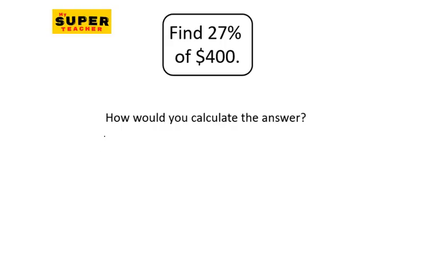Hello, this is Super Duper Awesome Mr. Kitty Pops. Let's see how many ways you can answer this question: Find 27% of $400. So the first way, you can pause the video and attempt the question.